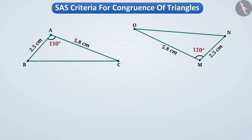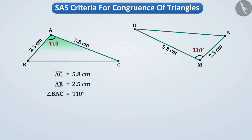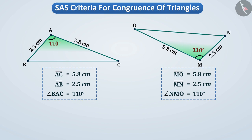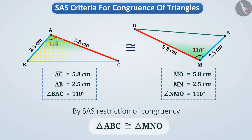Here two triangles are given. In triangle ABC, side AC is equal to 5.8 cm, side AB is equal to 2.5 cm, and angle BAC is equal to 110 degrees. In triangle MNO, side MO is equal to 5.8 cm, side MN is equal to 2.5 cm, and angle NMO is equal to 110 degrees. The corresponding two sides and the included angle of triangle ABC equal those of triangle MNO. Hence, both triangles are congruent. When superposed, they cover each other completely. Therefore, triangle ABC is congruent to triangle MNO by the SAS congruence criteria.